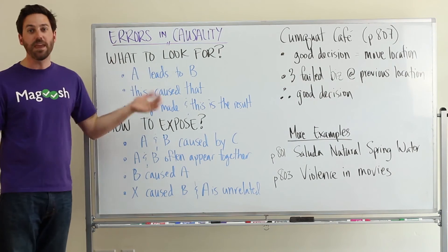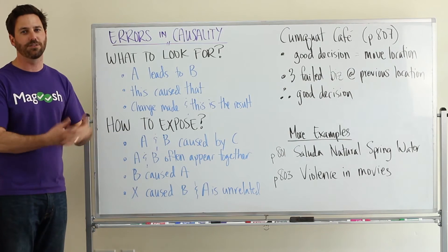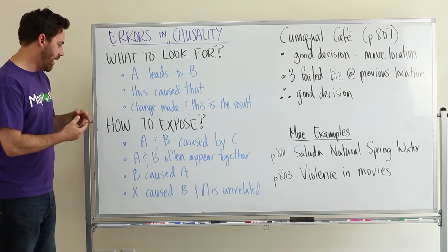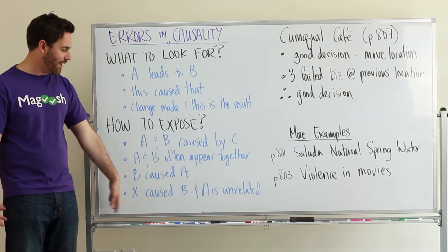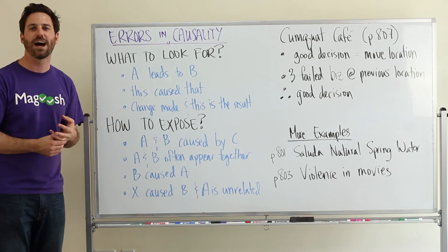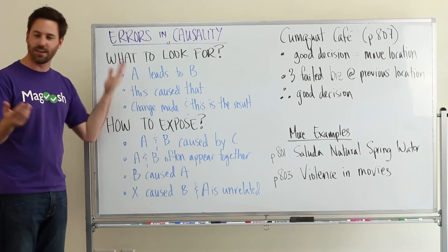Another one, perhaps B caused A. Maybe it's the other way around. You just got it wrong. You saw the order of events differently. Or finally, maybe something caused B, and A is completely unrelated. It just happens to be there, but is not factored why B exists.